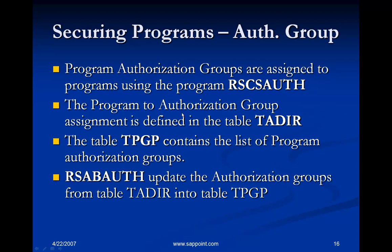The program-to-authorization-group assignment is defined in the table TADIR. Using transaction SE16, you can see the list of programs in the SAP system and find out which authorization groups those programs are associated with — TADIR contains the relationship between programs and authorization groups. There is another table called TPGP which contains the list of program authorization groups. TPGP does not contain the program name, but whatever authorization groups for programs have been defined in the system, you can see that list in TPGP.